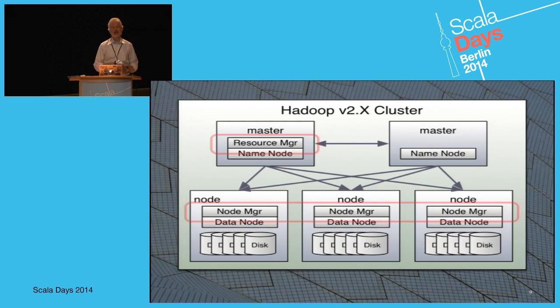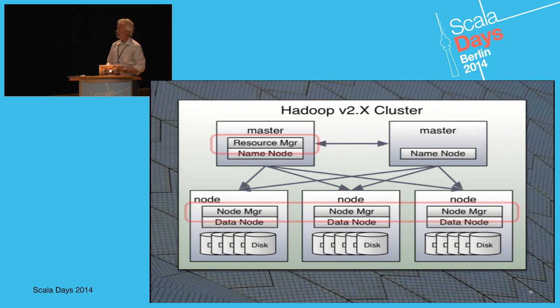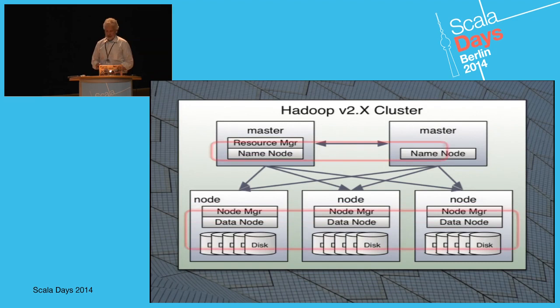It divides roughly into two categories. You have master nodes — a resource manager that schedules all the resources, and node managers. You submit a job, it figures out you'll need five tasks, and puts those tasks where the data is. Maybe two running on the first node and two on the last — it does that kind of scheduling negotiation.